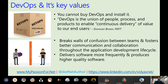DevOps culture breaks the wall of confusion between teams and fosters better communication and collaboration throughout the application development life cycle — from building and testing code to delivering it to production. You deliver software more frequently and produce higher quality software. Because Dev and Ops are together, there's no wall of confusion. The same team owns the deployment — one person can write the code and own its deployment. Netflix, Facebook, Amazon, Google, T-Mobile — all high-performing software organizations follow DevOps.